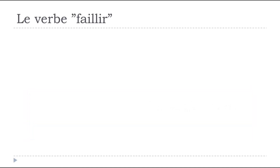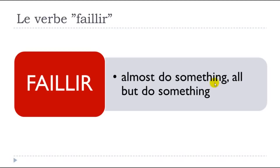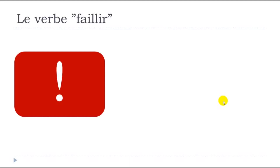So we can start right now. Faillir is quite interesting and useful — it's a strange verb, but it is used quite often, and the meaning of faillir is 'almost do something' or 'all but do something.'